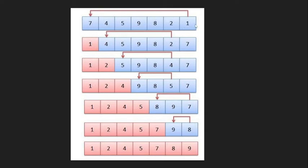The minimum element in the list is 1. So we swap 7 and 1. Here 1 and 7 are swapped. This completes the first iteration. Next, 4 is considered and the next minimum element is swapped. This is the swap for the second step.